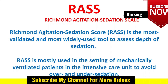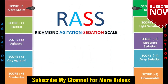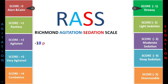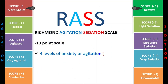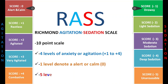The Richmond Agitation Sedation Scale is a 10-point scale. Plus 1 to plus 4 levels denote level of anxiety or agitation, level 0 denotes alert and calm, and level minus 1 to minus 5 denotes levels of sedation. The RASS scale has been discussed in a previous video and a link can be found in the description below for reference.